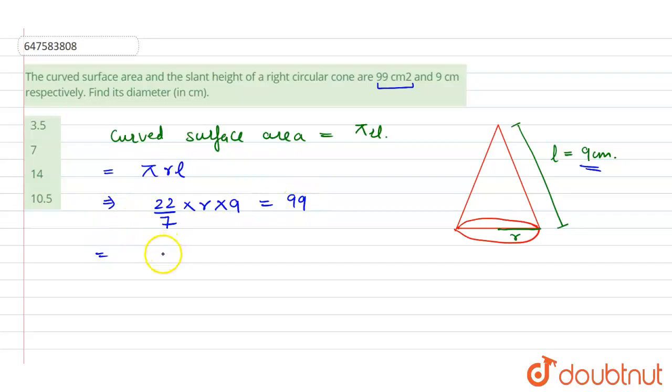Now, solving this: R × 22 × 9 = 99 × 7. We will get R is 7/2 cm.